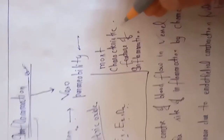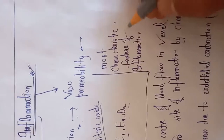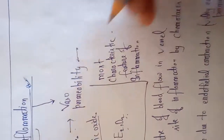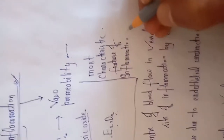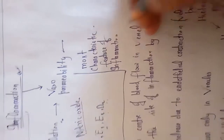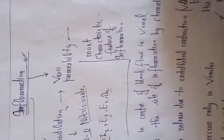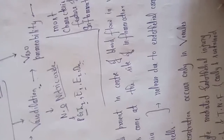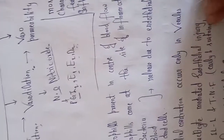Only when vascular permeability occurs do we say inflammation has started. Let us now look at the stages of vascular permeability.